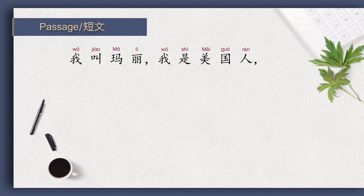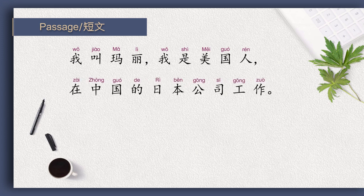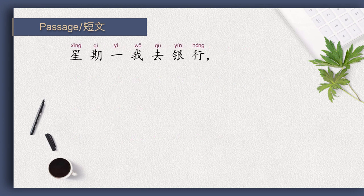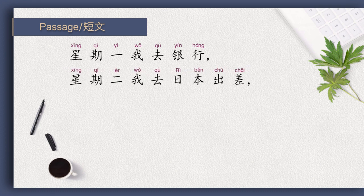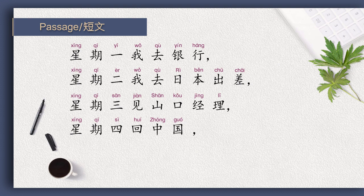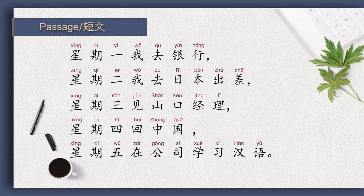我叫玛丽。 我是美国人。 在中国的日本公司工作。 我是秘书。 这周的工作太忙了。 星期一，我去银行。 星期二，我去日本出差。 星期三，见山口经理。 星期四，回中国。 星期五，在公司学习汉语。